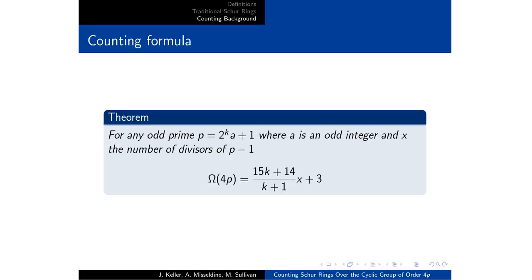That together with the last trivial Schur ring, which there's always one of, will give us this theorem that for any odd prime p equals 2k to the a plus 1, we get that omega of 4p is the following.